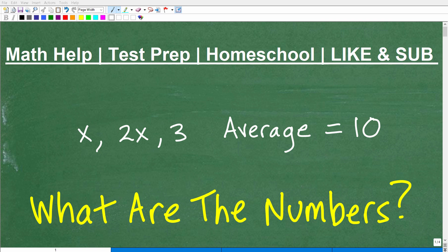Okay, let's have some real fun and do a nice little word problem involving averages. What we want to do is find out what the numbers are. So a problem like this would go something like, given three numbers x, 2x, and 3, the average of these three numbers is 10. What are these numbers? This is what we want to try to figure out.